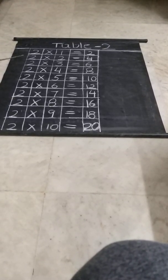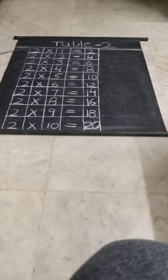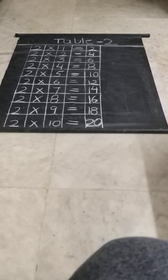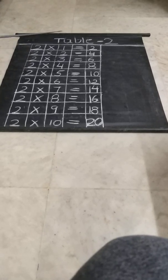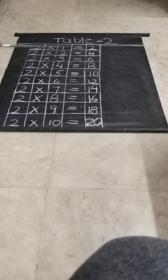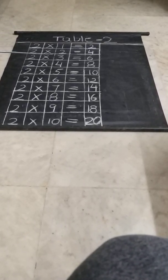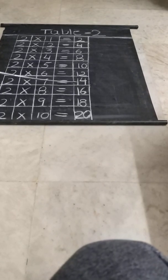But there is another way to say the table. How? Two 1's are 2. Two 2's are 4. Two 3's are 6. Two 4's are 8. Two 5's are 10. Two 6's are 12. Two 7's are 14. Two 8's are 16. Two 9's are 18. Two 10's are 20. This is the interesting way.